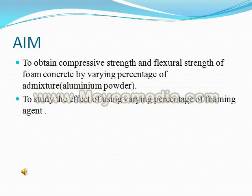Aim: To obtain Compressive Strength and Flexure Strength of Foam Concrete by varying percentage of Aluminium Powder. To study the effects of using various percentages of foam agent.